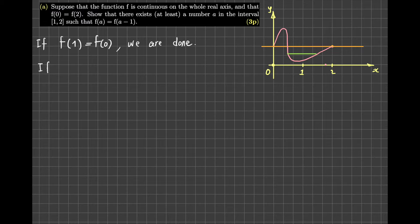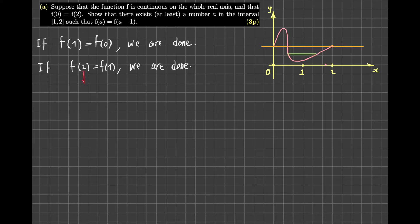Similarly, if f of 2 is equal to f of 1, we are done. In this case, I give the role of a to the number 2. Two is in the closed interval, and then f of 2 equals f of 1, meaning f of a equals f of a minus 1. So in these two special cases the proof is complete.